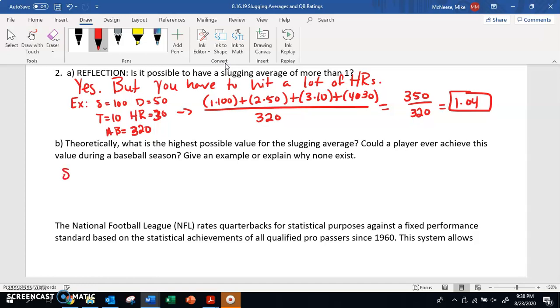So our formula here would be slugging percentage equals, singles are worth 1, well you got zero of them. Doubles are worth 2, you still got zero of them. Triples are worth 3, you got zero of those. And then home runs. Now, if somebody went up to bat, got a home run, went up to bat, got a home run, went up to bat, got a home run - every single time they went to bat, they got a home run. So every at-bat is a home run. What we can do for home runs is say that our number of home runs is equal to our at-bats.